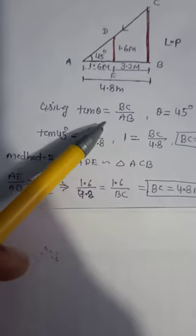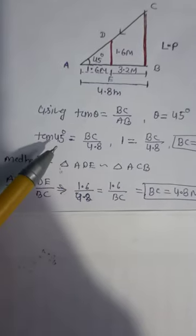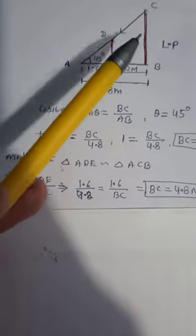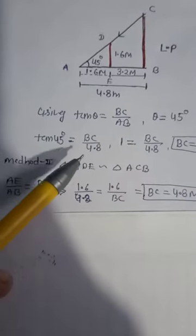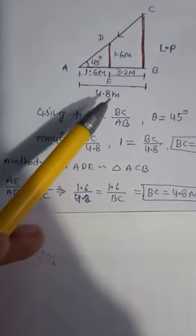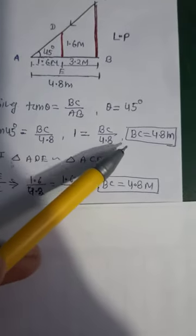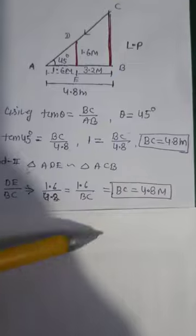Theta will be 45 degrees, so tan 45. BC, you can see that is a lamppost which we have to find, and the base is given as 4.8. So tan 45 will be 1, so the entire value of the lamppost will be 4.8 meters.